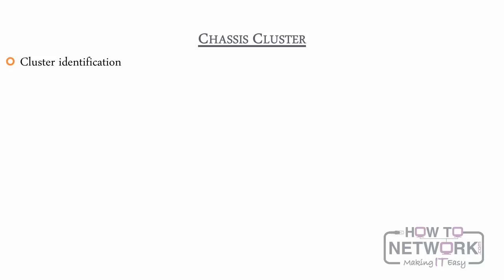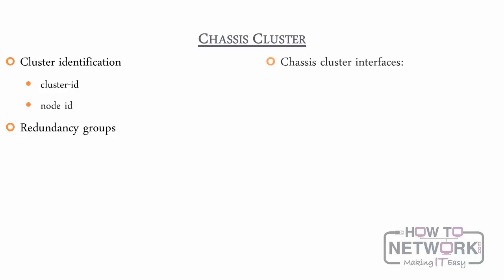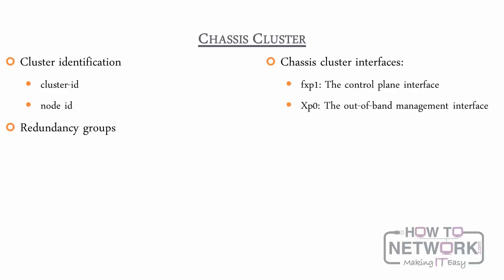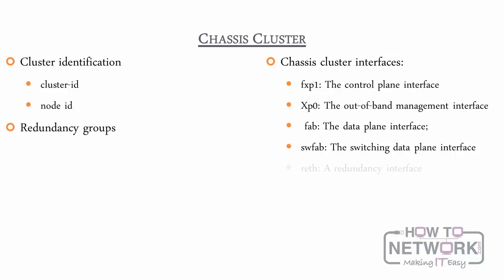A cluster configuration includes a cluster ID, node ID, redundancy groups, and chassis cluster interfaces such as FXP0 or FXP1 control plane interfaces, FAB the data plane interface, SWFAB the switching data plane interface, and Wreath, a redundancy interface.